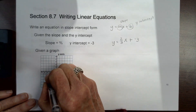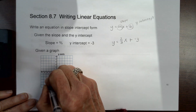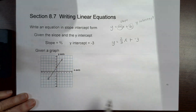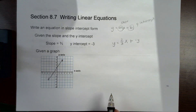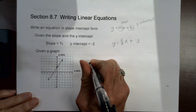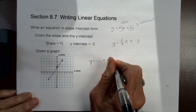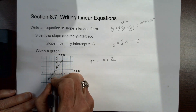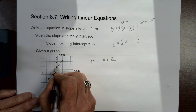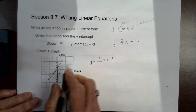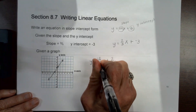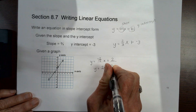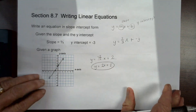You might also have to write an equation given a graph. The first thing is to find where it crosses the y-axis — the y-intercept is two. Then I find the slope by going from one point to another: I go down two and to the left one, giving negative two over negative one, which equals positive two. So the equation is y equals 2x plus 2.